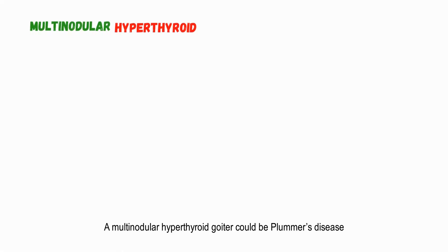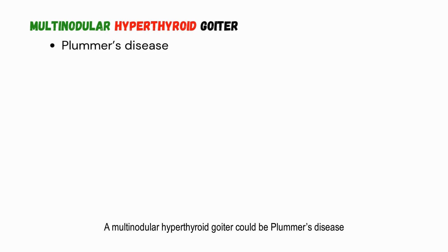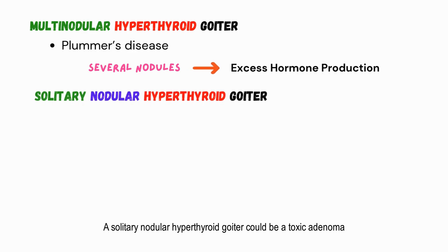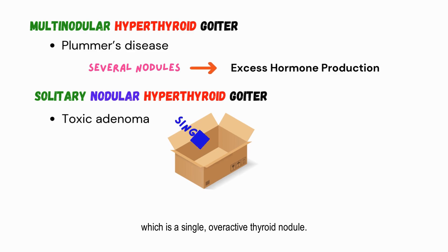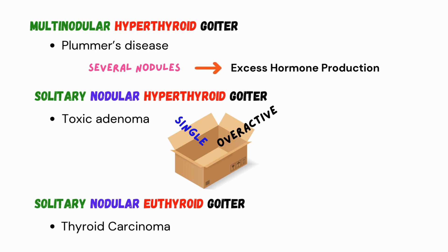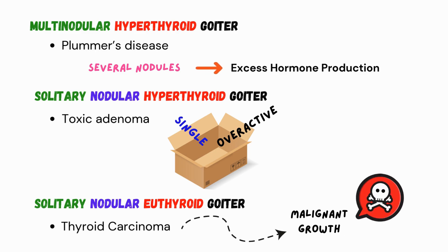For example, a multinodular hyperthyroid goiter could be Plummer's disease, where several nodules cause excess hormone production. A solitary nodular hyperthyroid goiter could be a toxic adenoma, which is a single overactive thyroid nodule. A solitary nodular euthyroid goiter could be thyroid carcinoma, which refers to a malignant growth in the thyroid.